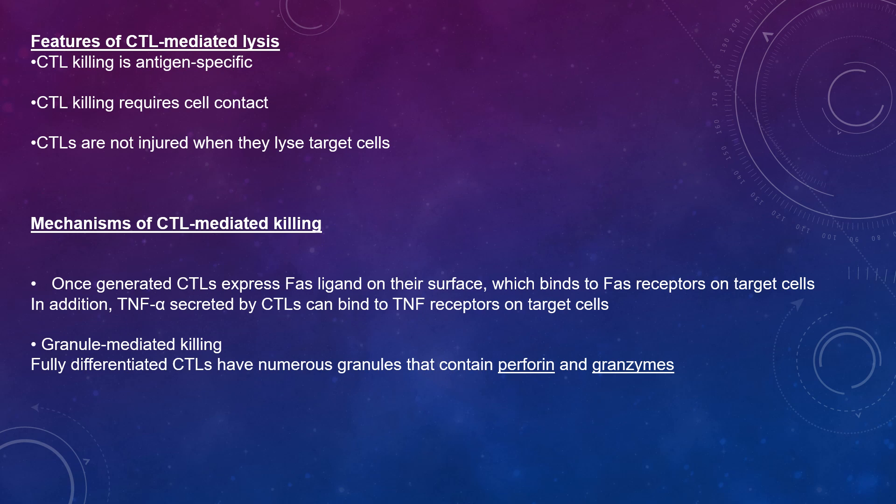There are various mechanisms by which CTL killing takes place. Some involve direct cell-to-cell contact and others result from production of certain cytokines; in all cases, death of the target cell is a result of apoptosis. The first mechanism is FAS and TNF-mediated killing. Once generated, CTLs express FAS ligand on their surface, which binds to FAS receptors on target cells. TNF-alpha secreted by CTLs can bind to TNF receptors on target cells. The FAS and TNF receptors are closely related family receptors, which upon binding their ligands form trimers. These receptors contain death domains in their cytoplasmic portion, which upon trimerization can activate caspases that induce apoptosis in the target cell.